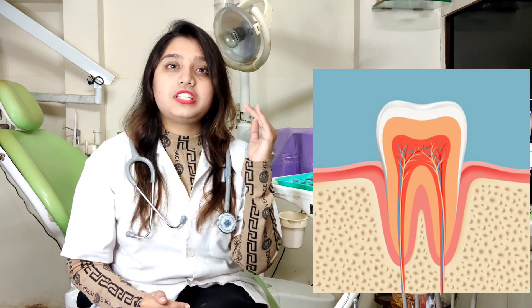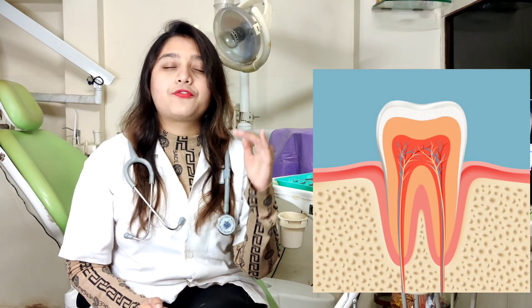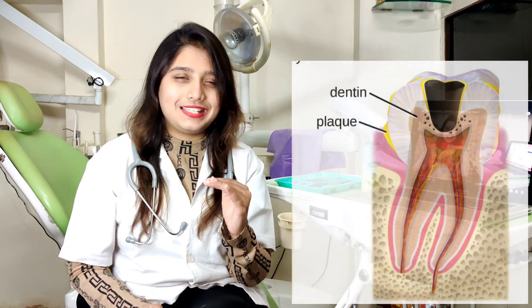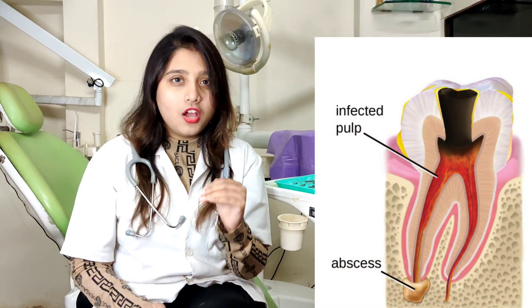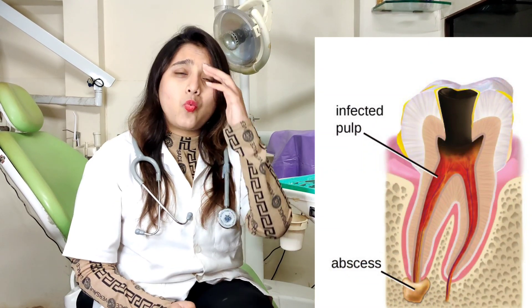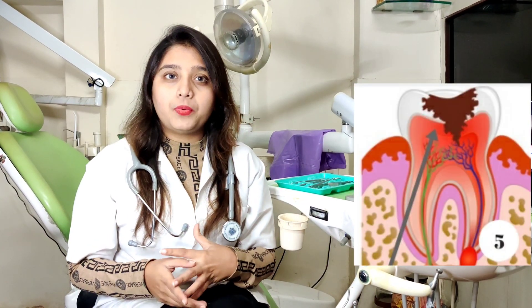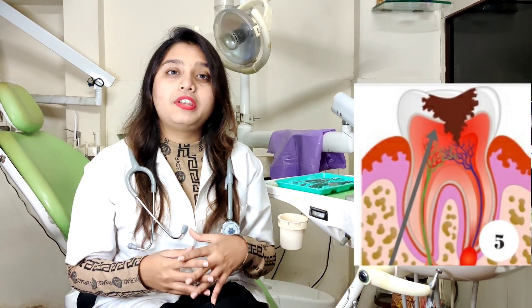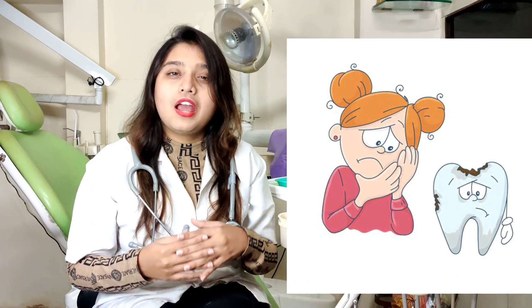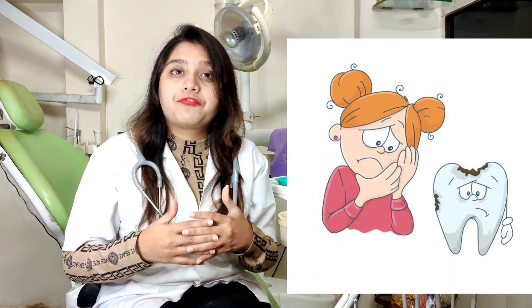When the cavity progresses from the enamel to the dentine and then reaches the pulp — the pulp is the vascular tissue of the tooth, which is a living thing — it is going to definitely cause you pain. And if this further increases, it may also lead to pulp exposure or a periapical cyst.